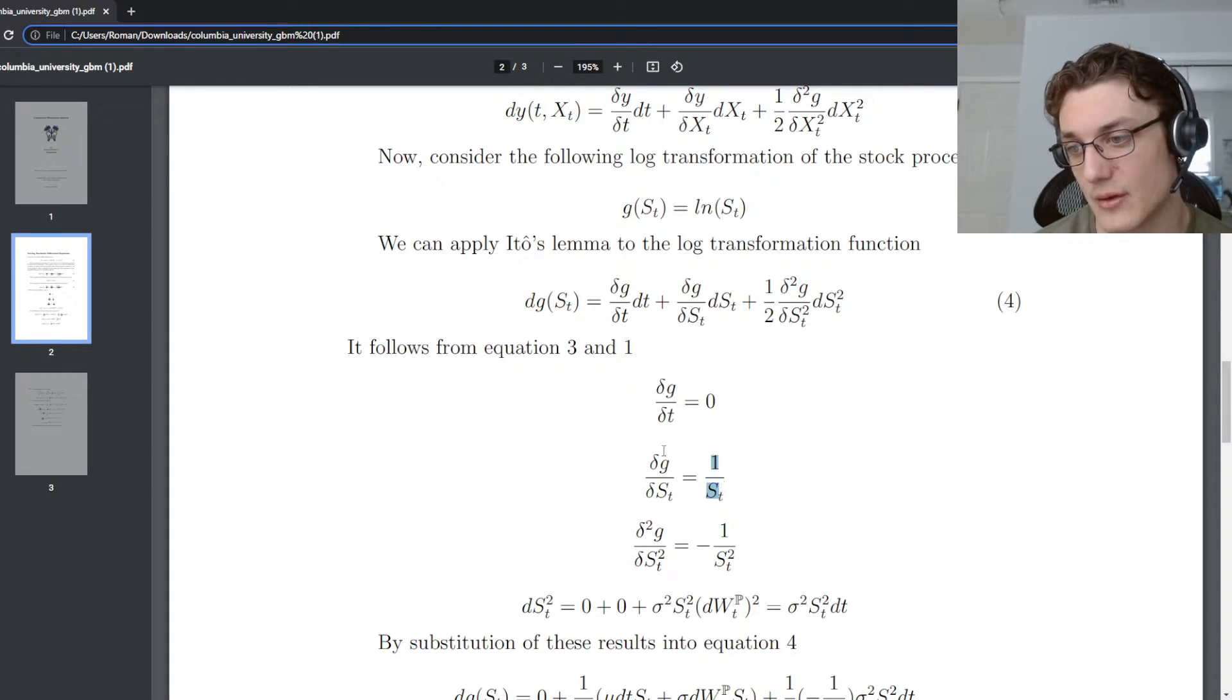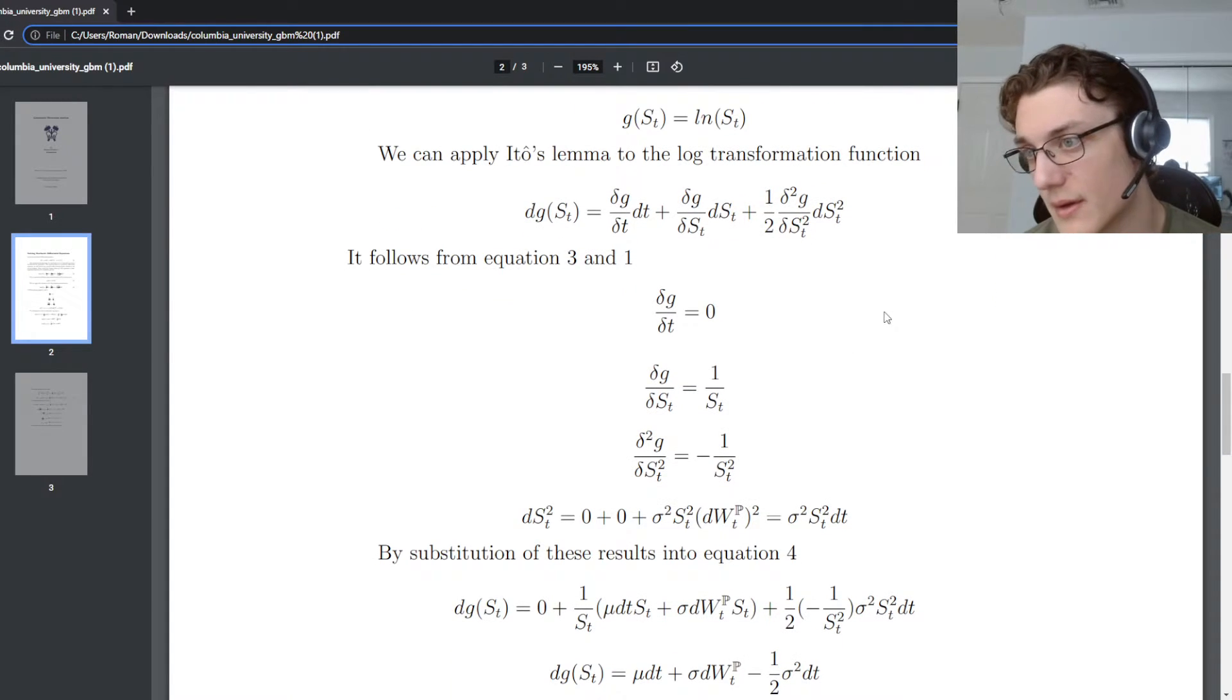You have this, take the derivative, you get the negative on the outside, because this is S of t to the negative one, then you increment by one, and then you get that squared term.